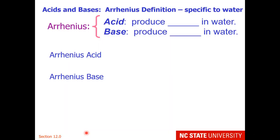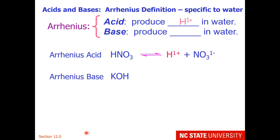Most students are familiar with the Arrhenius definition of acids and bases. This is very specific to water. An Arrhenius acid would be something like nitric acid, which when put in water makes a hydrogen ion and a nitrate anion. So acids produce hydrogen ion in water. Arrhenius bases would be something like potassium hydroxide, which when placed in water is soluble and makes potassium cation and hydroxide anion. So bases produce hydroxide in water.